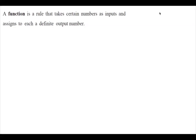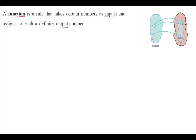Let us review what a function is. A function is a rule that takes some values as input values and gives us some output values. It has a domain, and it has a larger set which is the codomain, and the range — the set of output values — is a subset of the codomain.